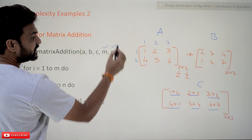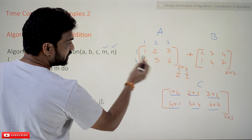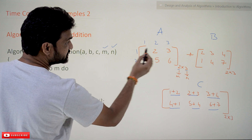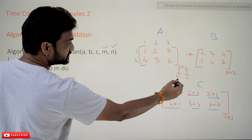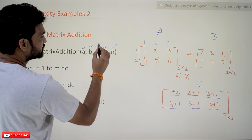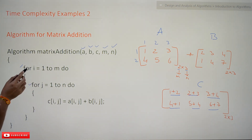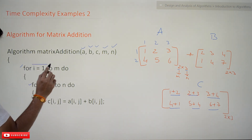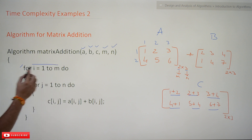The algorithm takes parameters m and n, where m equals 2 (rows) and n equals 3 (columns), and A, B, C are the matrices. Now, how many times will this for loop line of code get executed?